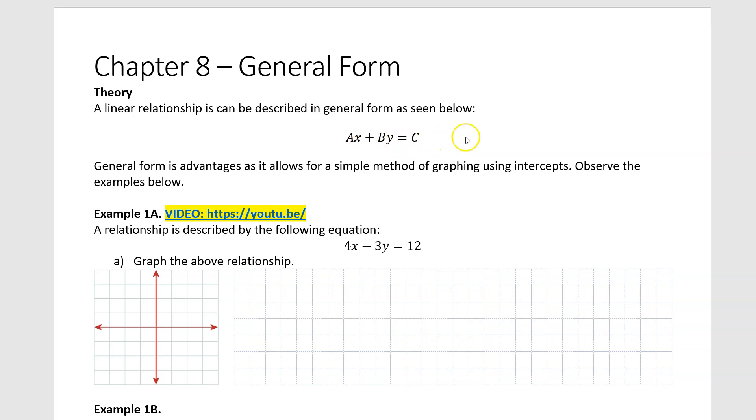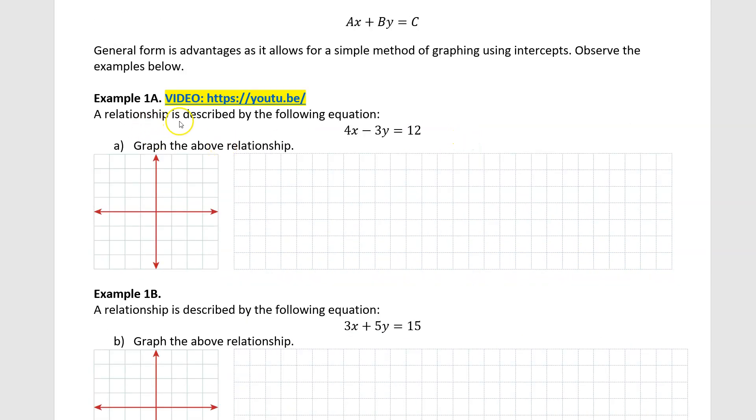Now if we go down to an example, a relationship is described by the following equation, 4x minus 3y equals 12. And what we're being asked to do is graph the above relationship. So the way in which this is really powerful is I can start off and go 4x minus 3y equals 12.